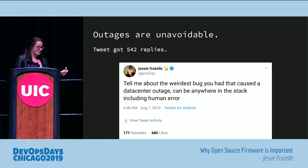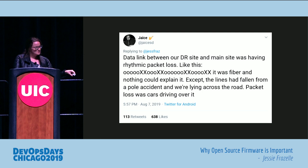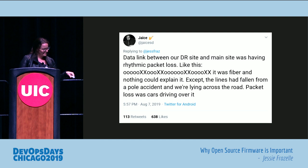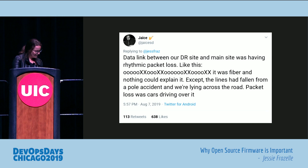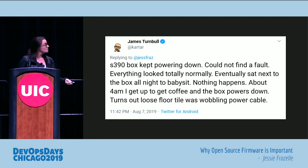Outages in general are unavoidable, and some of these are really funny. A data link between a DR site and main site was having rhythmic packet loss. It was fiber and nothing could explain it — except the lines had fallen from a pole and were lying across the road. Packet loss was cars driving over the fiber. That's crazy — it's weight related.